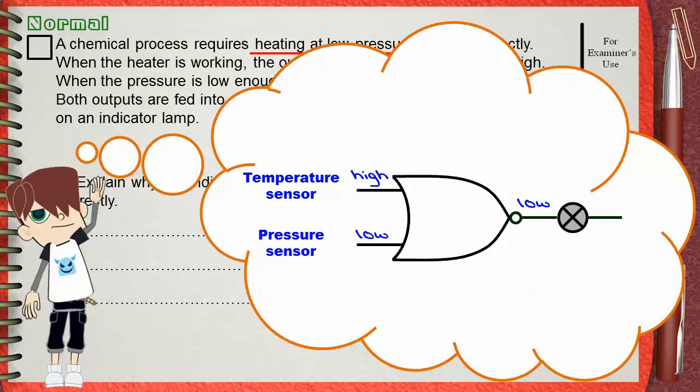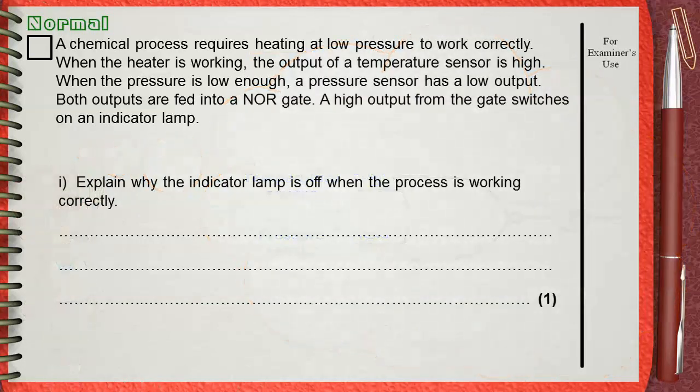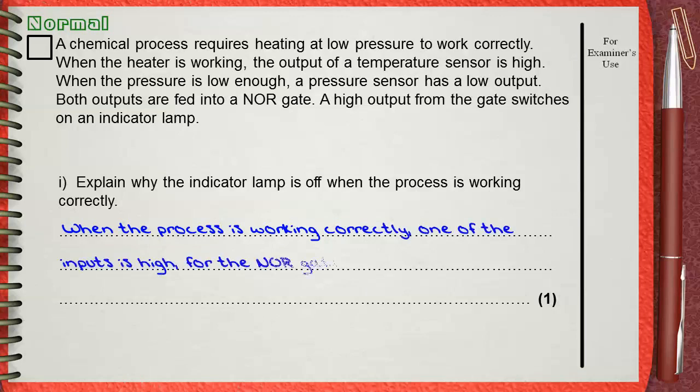This means that if the chemical process is working correctly, the lamp will be off. Let's go back to the question. When the process is working correctly, one of the inputs is high and the other is low. For the NOR gate, if one input is high, the output will be low.